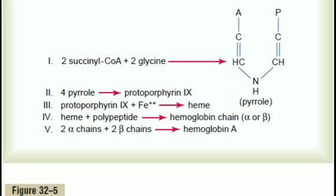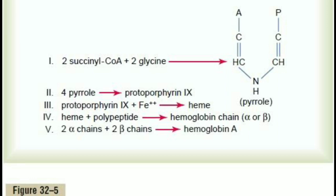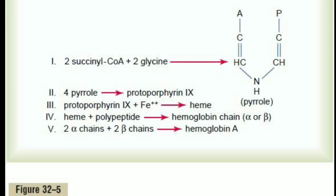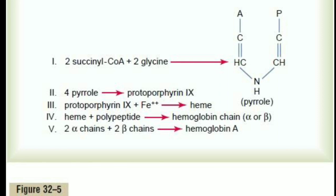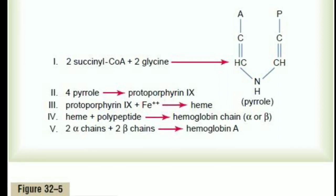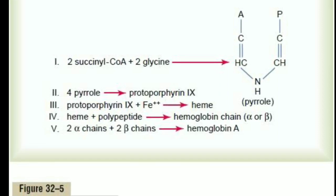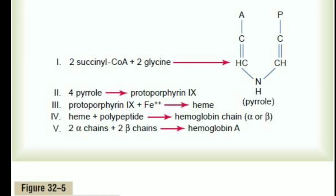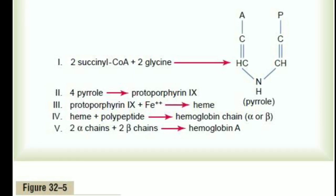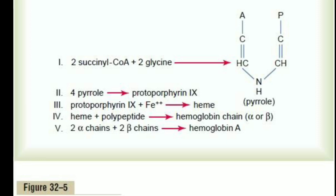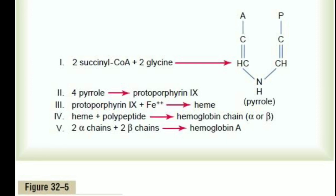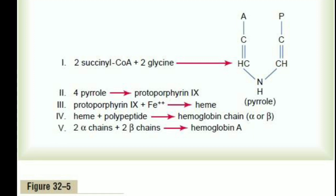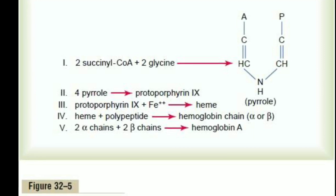On screen you can see the basic chemical steps in the formation of hemoglobin. First, succinyl-CoA formed in the Krebs metabolic cycle binds with glycine to form a pyrrole molecule. Then four pyrrole molecules combine to form protoporphyrin 9, which then combines with iron to form the heme molecule.